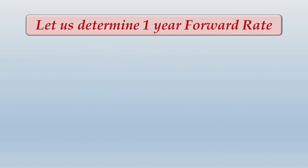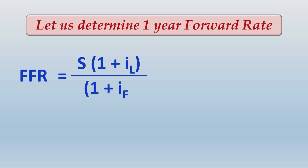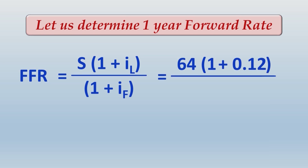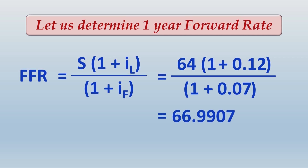Let us determine the one-year forward rate. The fair forward rate formula is: spot rate × (1 + IL) / (1 + IF). Substituting the values: 64 × 1.12 / 1.07 = 66.9907. So the value of dollar 1, which is rupees 64 today, will not remain rupees 64 after one year — it will become 66.9907. This means there will be an exchange loss on your repayment.